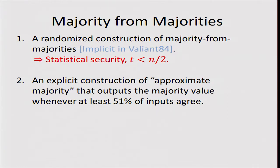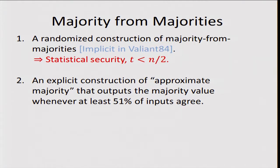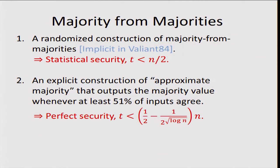Alternatively, we show a partial derandomization of Valiant's formula: a construction that computes an approximate majority, working correctly when at least 51% of the inputs are 1 or 0. Exactly in between, there's no guarantee. This is one of the more technically challenging parts of the work. We can actually go all the way down to one-half plus something going rapidly to zero. Using this construction, we obtain a protocol with perfect security but only a close-to-optimal threshold — not exactly one-half, a little bit less.